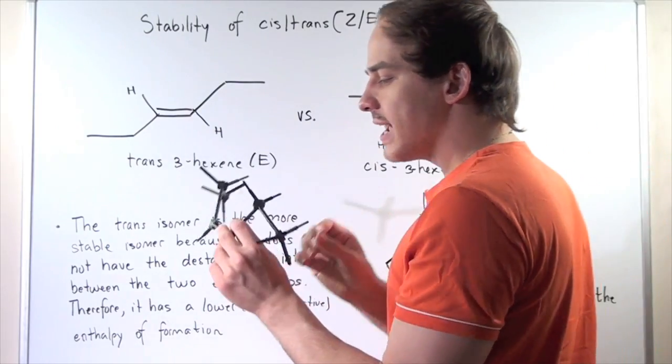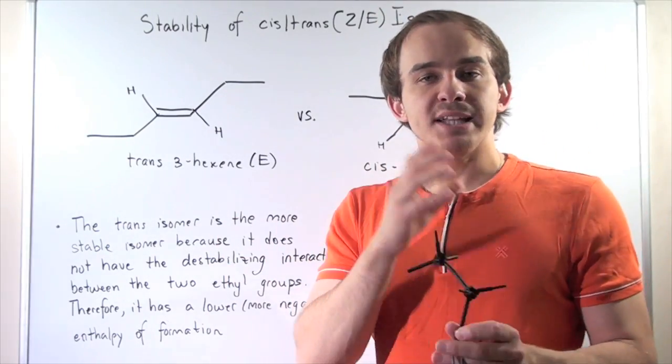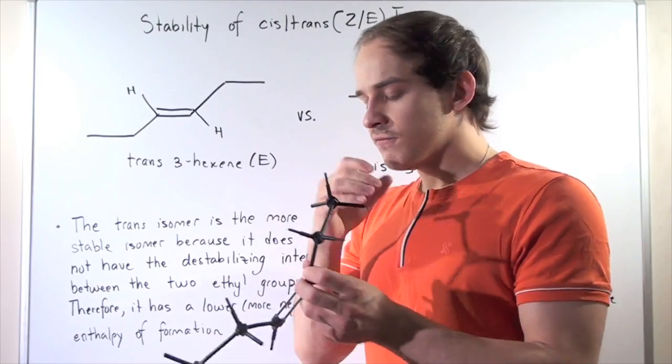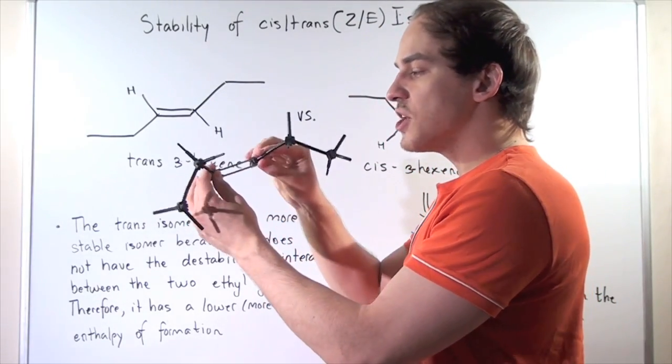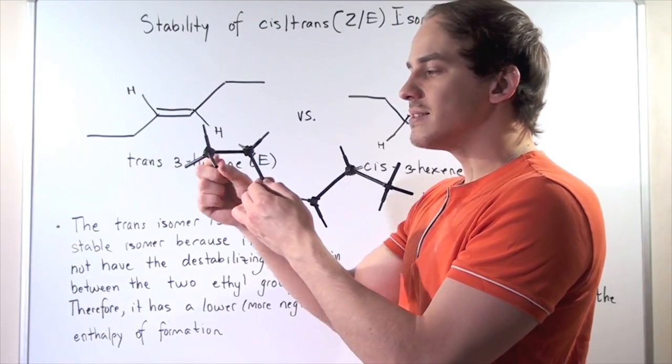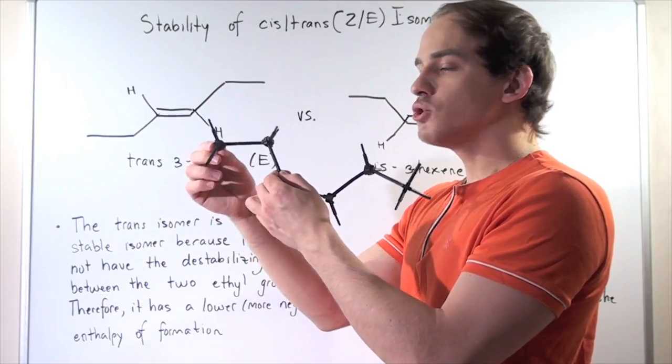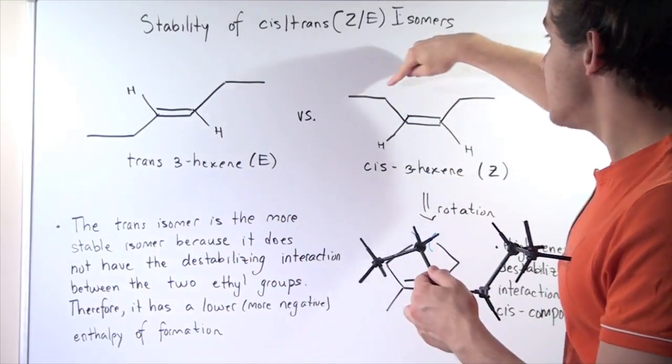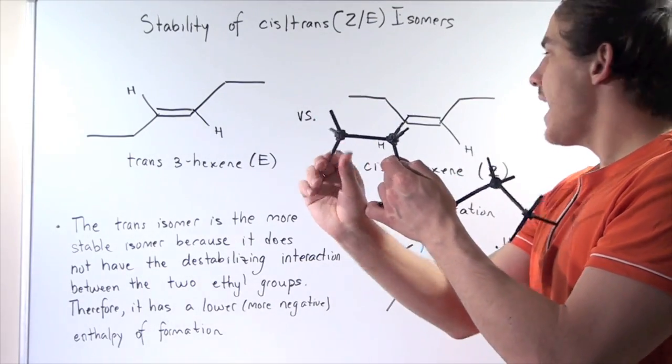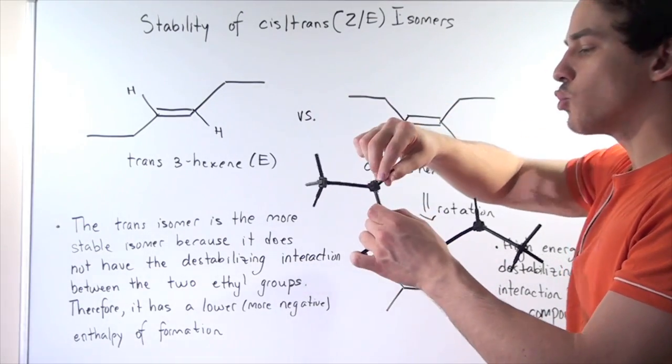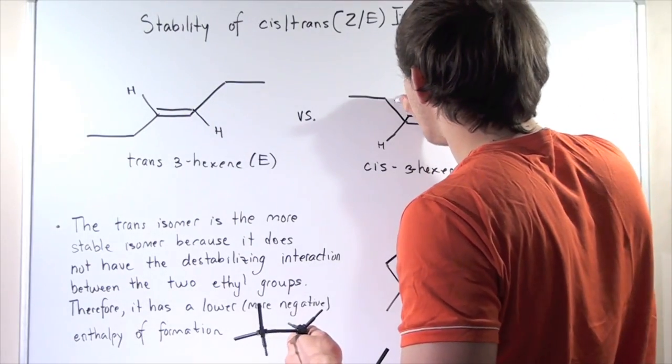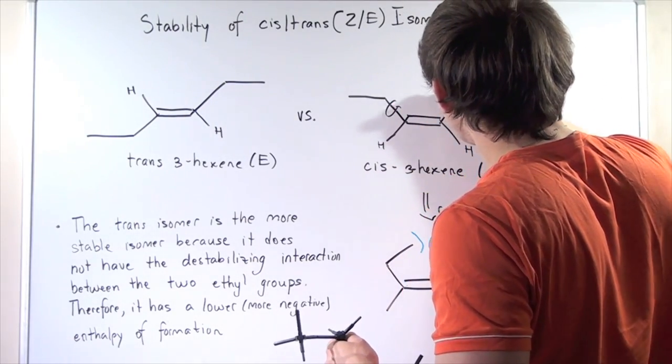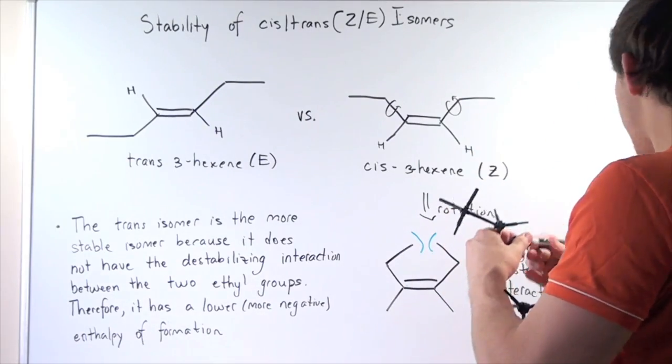One important detail that you must remember about double bonds versus single bonds: double bonds do not rotate, they're rigid, while single covalent bonds are able to rotate. So this bond here will rotate and this bond here will also rotate. So let's suppose that this bond rotates and this bond also rotates. What will happen then?